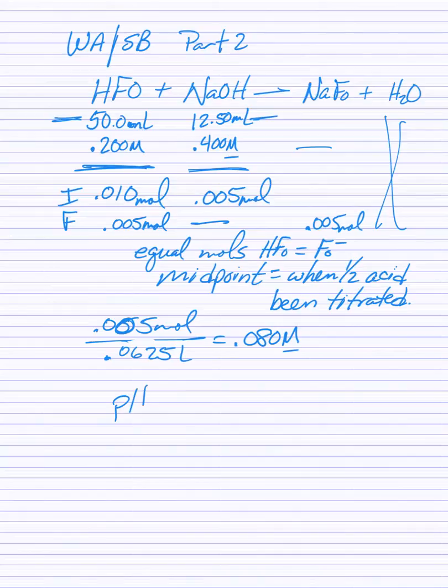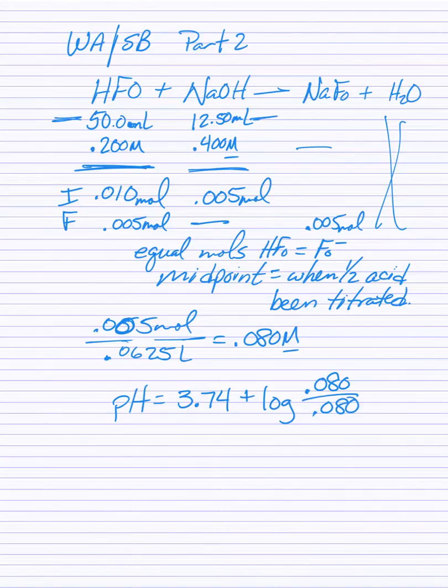Well guess what, we want the pH. The pH is equal to the pKa, 3.74 from the first part, plus the log of A minus 0.08 over 0.08. Guess what, log of one is zero. The pH of this is going to be equal to the pKa.